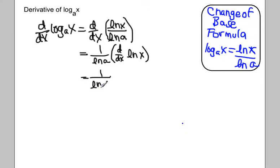we're going to get 1 over the ln of a is then going to, the derivative of ln of x is going to be 1 over x. So the derivative of the log base a of x is 1 over x ln of a.